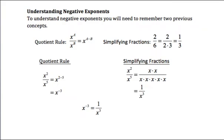To understand negative exponents, you will need to remember two previous concepts. First is the quotient rule: any time we're dividing factors that have the same base — here x to the a power divided by x to the b power — when we're dividing we subtract those exponents, giving us x to the a minus b.